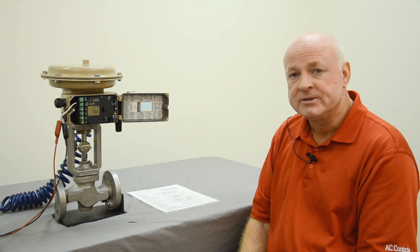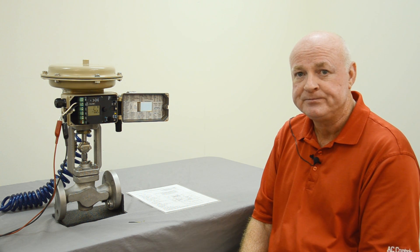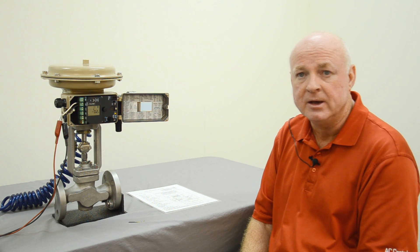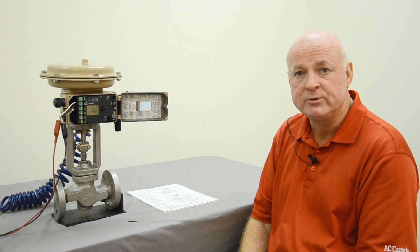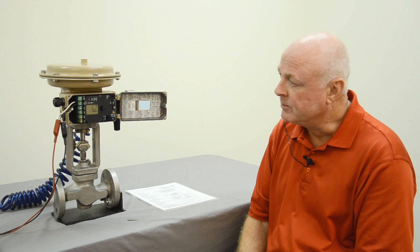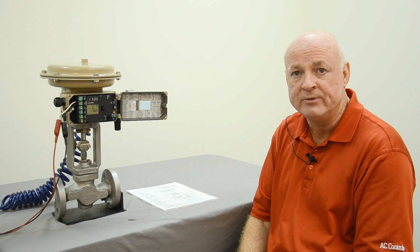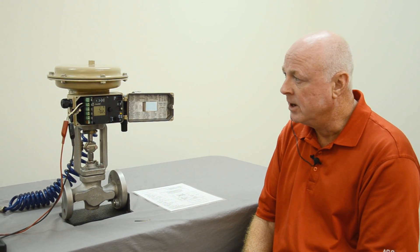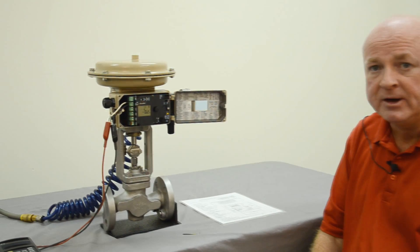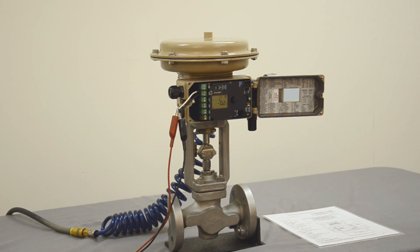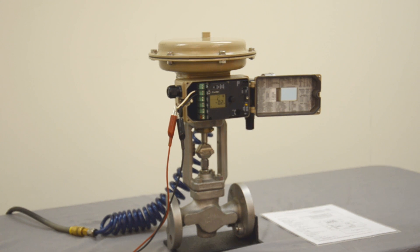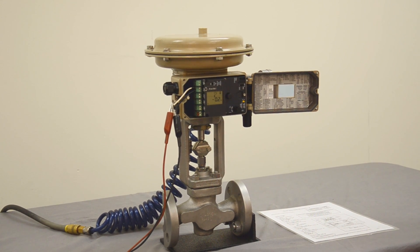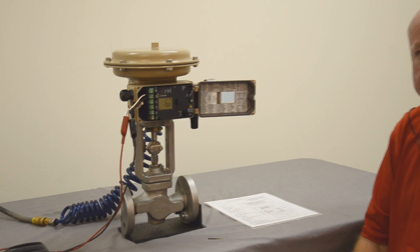So let's get started on the configuration. The first thing you'll need to do, you'll need to be able to provide a power supply, four to twenty milliamps steps to the positioner. They would go to terminals eleven and twelve on the board. You also need an air supply. The air supply needs to be greater than the spring range of the valve or actuator. That information can be found on the metal tag on the actuator.